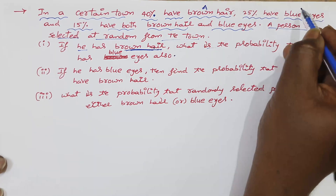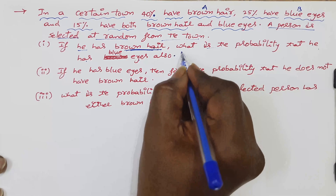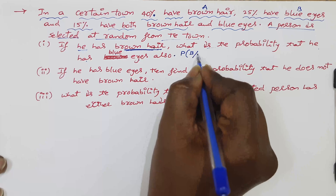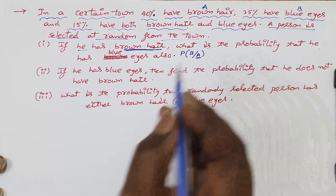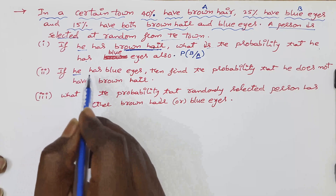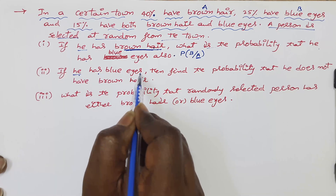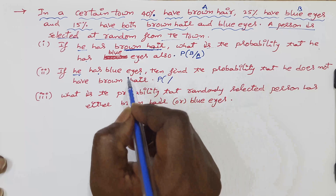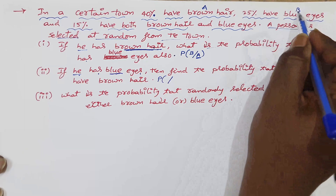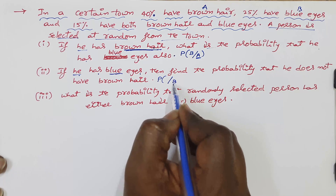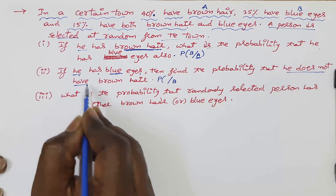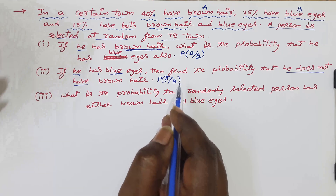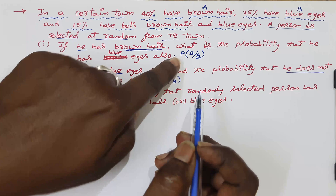Let event A be that the person has brown hair, and event B be that the person has blue eyes. For the first question we need P(B|A). For the second question: if the randomly selected person has blue eyes, find the probability that he does not have brown hair — that is, find P(Ā|B).